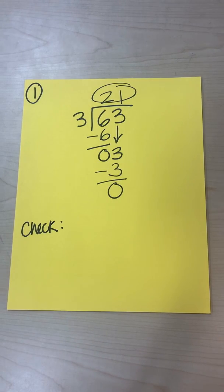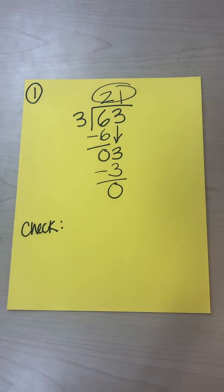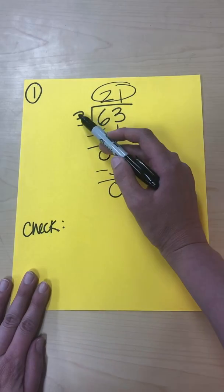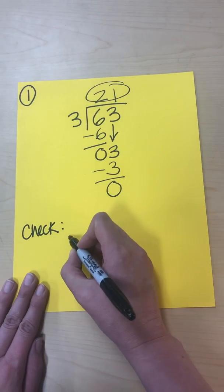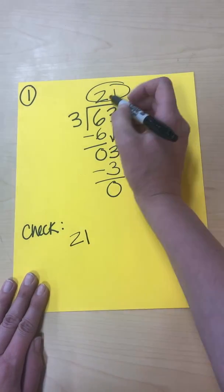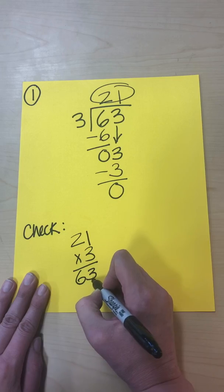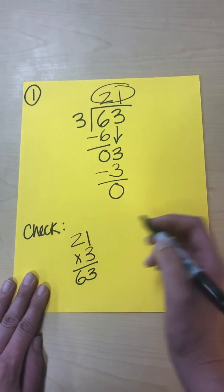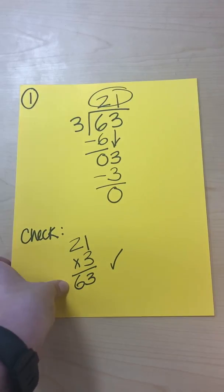There's a spot to check your work, and it's very important to check when doing long division because there are so many steps. The way you check is to multiply the quotient by the divisor — you should get the original dividend. So 21 times 3 equals 63, and 63 is what we had on the inside, so we know we got the right answer.